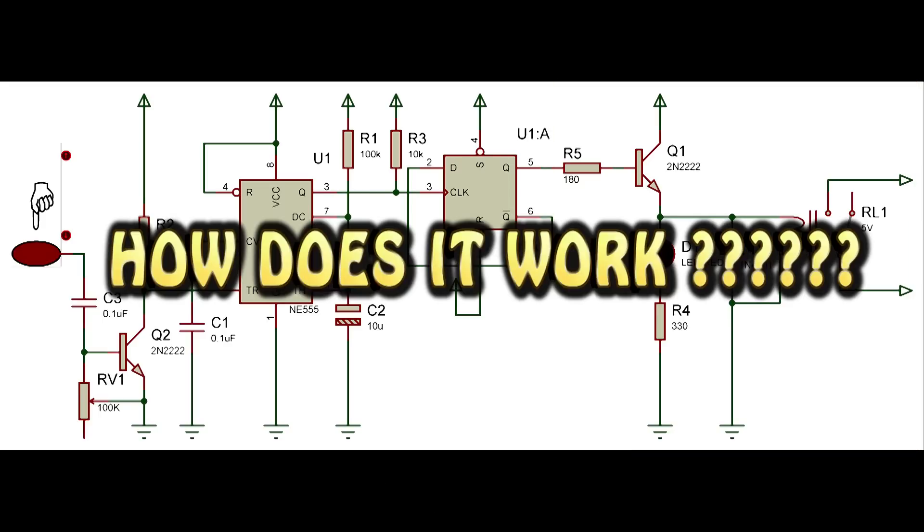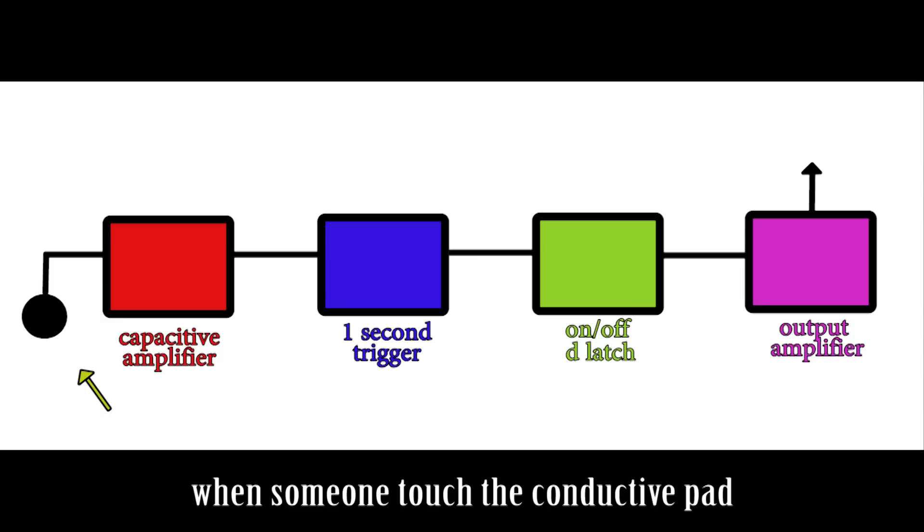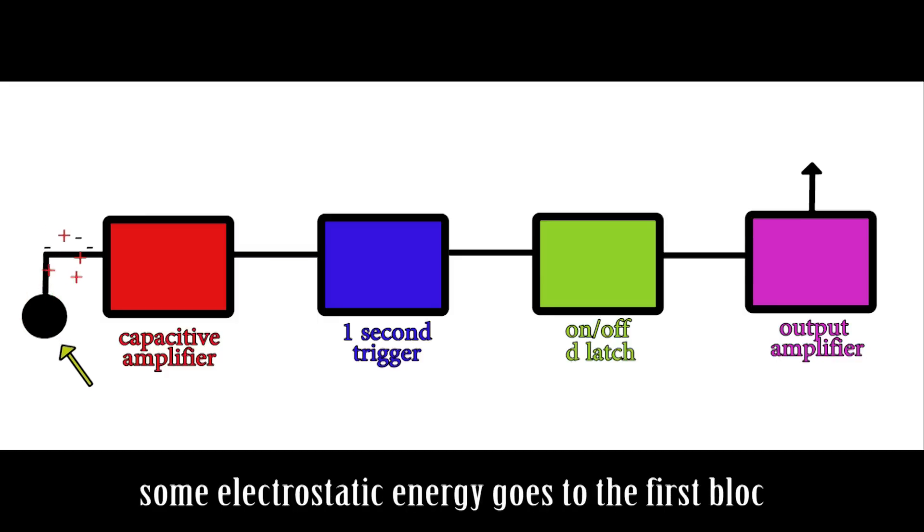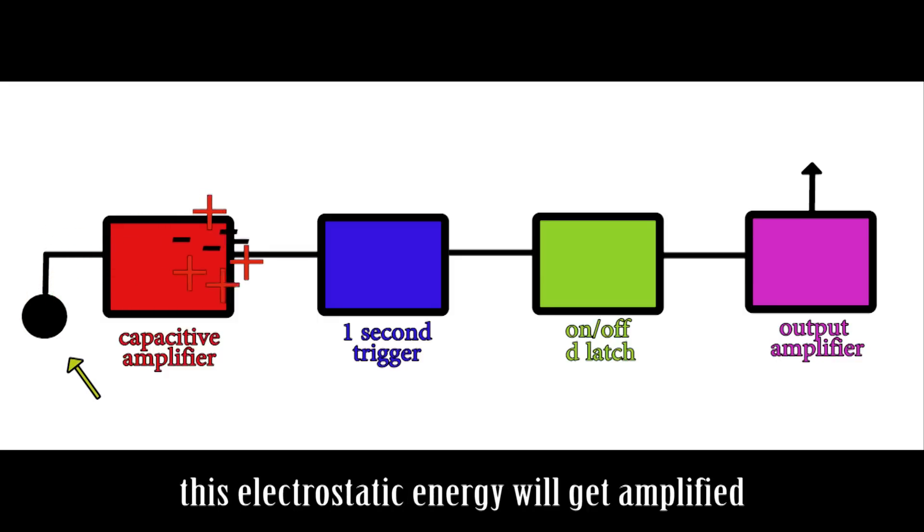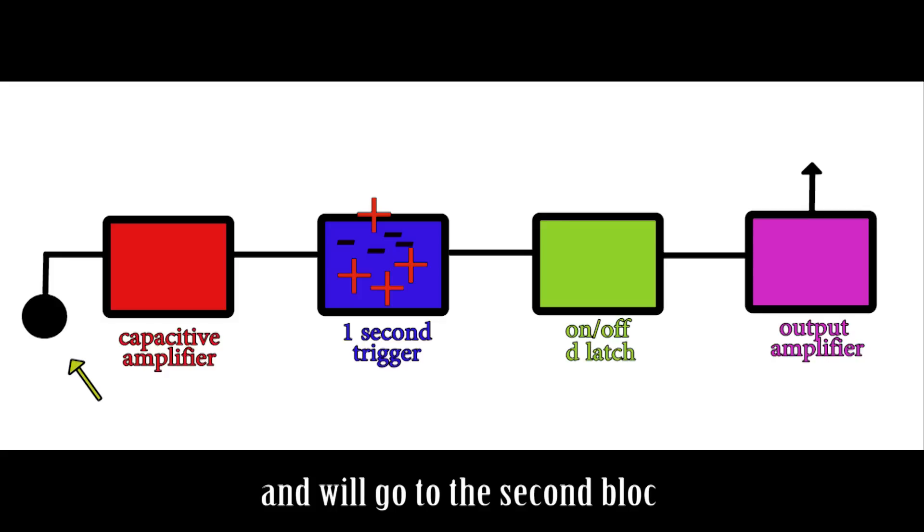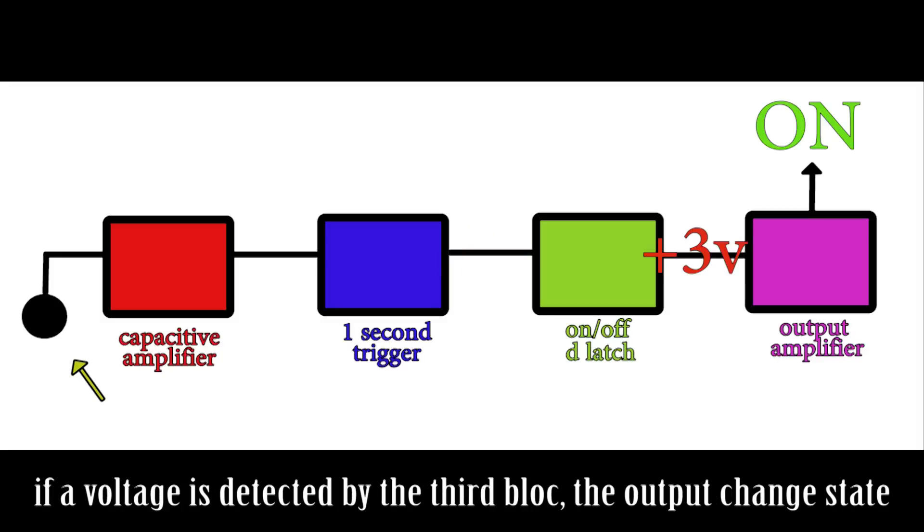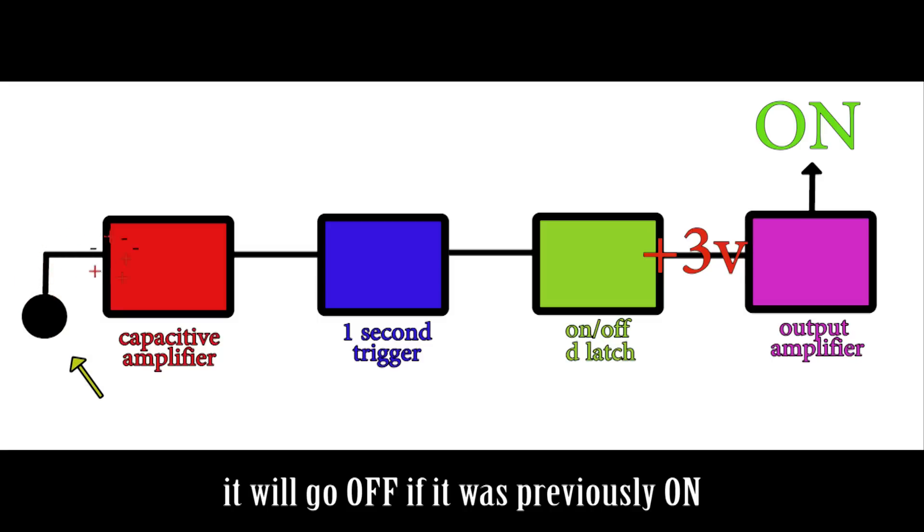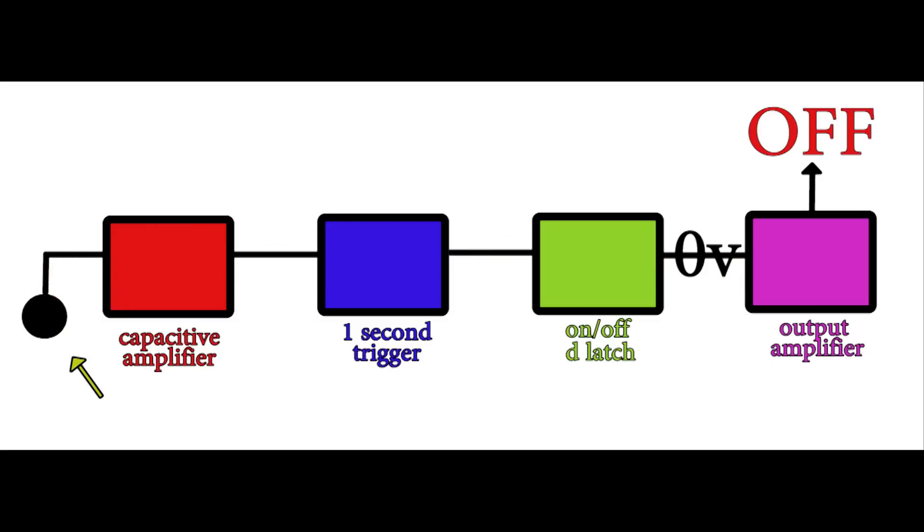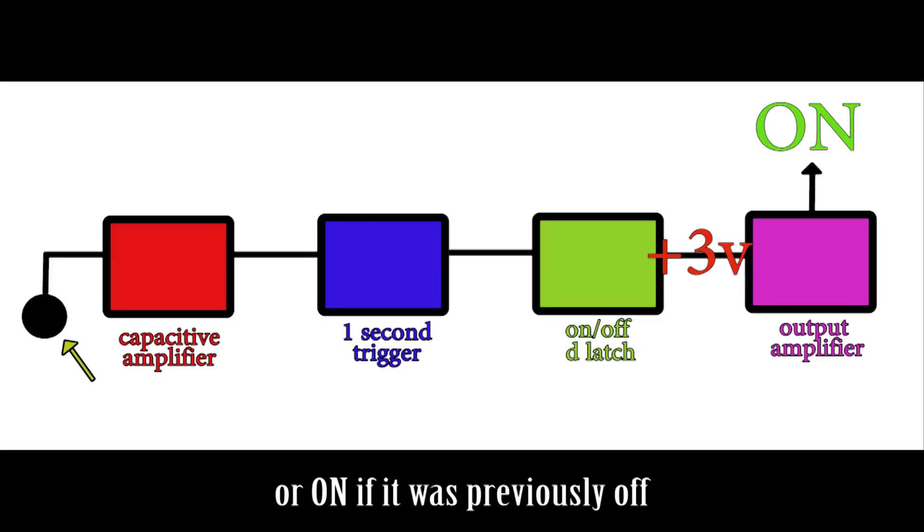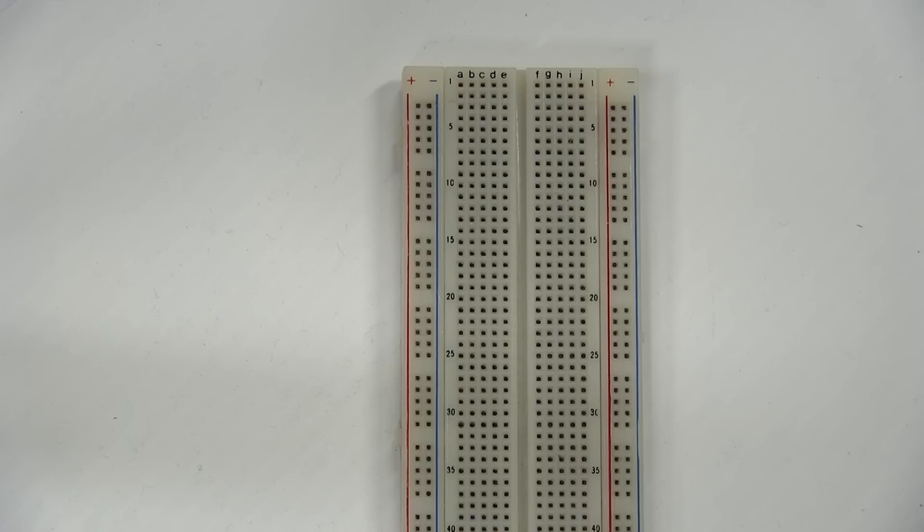how does it work? When someone touches a conductive pad, some electrostatic energy goes to the first block. This electrostatic energy will get amplified and go to the second block. When static energy is detected, a 3 volt will be released for one second. If a voltage is detected by the third block, the output changes state. It will go off if it was previously on, or on if it was previously off, and so on. For the